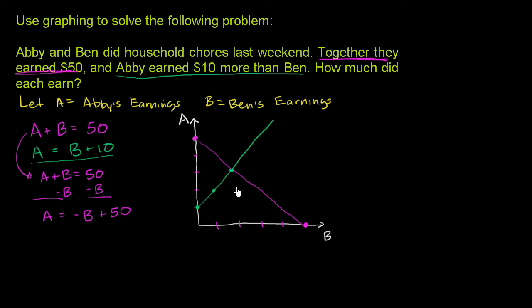It looks like we have a point of intersection at Ben earning $20. Let me label this: $10, $20, $30, $40, and $50. This is Ben earning $20 and Abby earning $30. Just eyeballing it, it looks like A is $30 and B is $20.